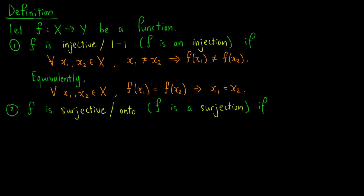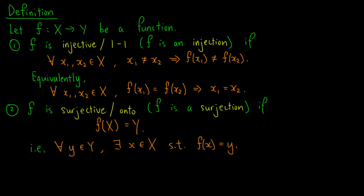We say that f is surjective, or onto, or that f is a surjection, if the image of f equals Y. In other words, for all elements y in the set Y, there exists an element x in the set X such that f of x equals y. This means that f is surjective when the image is equal to the range. More precisely, whatever element y you give me in the range, I can always find an element x in the domain such that x is mapped to y.